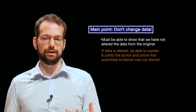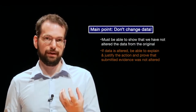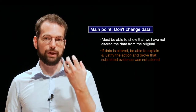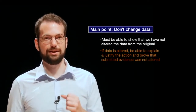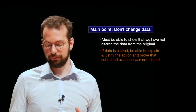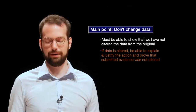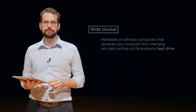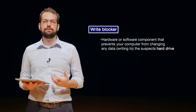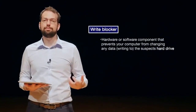Any information that we collect from this data — we have to be able to prove it was never modified, or that the chance of it being modified is extremely low. We'll talk about how to do that in a second. One of the biggest things we use in digital forensics to ensure we are not modifying data is something called a write blocker.